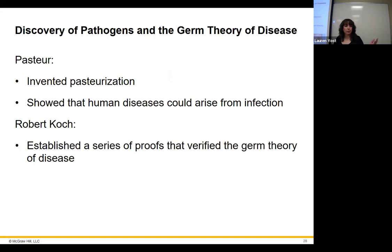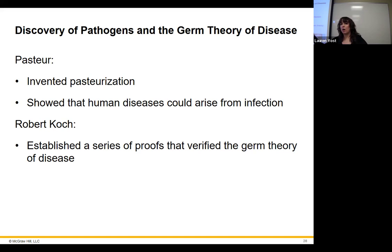Pasteur established germ theory — proving diseases start from something, not spontaneous generation. Robert Koch then came along supporting germ theory by identifying causative agents, definitively isolating what's causing a specific disease. He discovered anthrax that way.